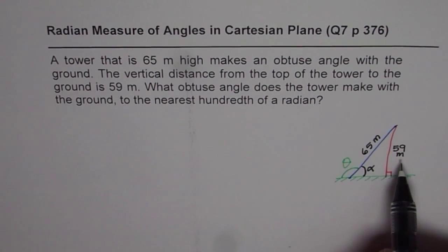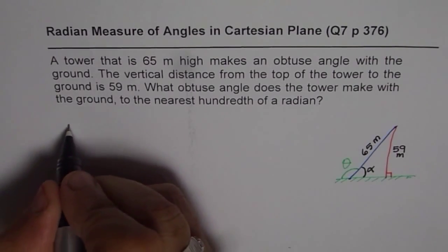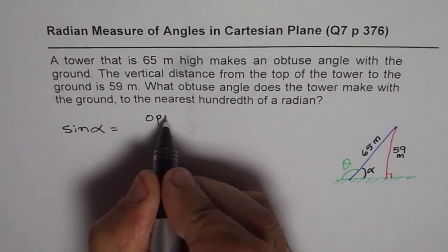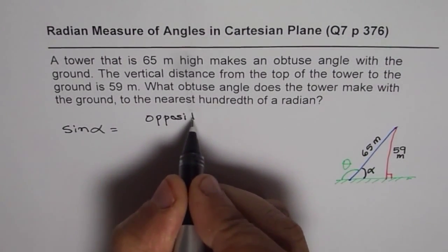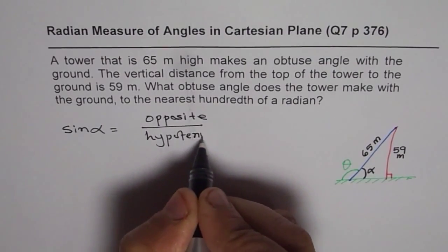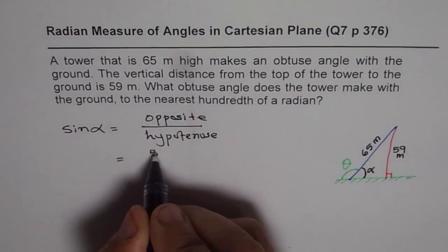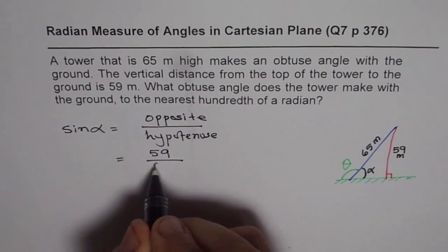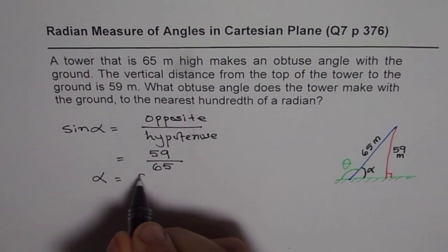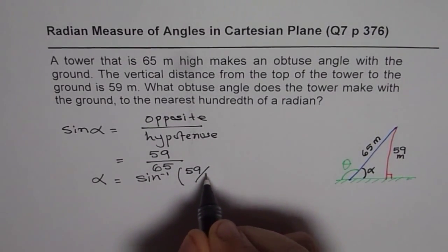Trigonometric ratio which is dealing with opposite and hypotenuse, that is sine. So we know sine of alpha equals opposite side over hypotenuse. In this case opposite side is 59, so it is 59 over 65 is the hypotenuse. So from here you can find alpha which is sine inverse of 59 over 65.